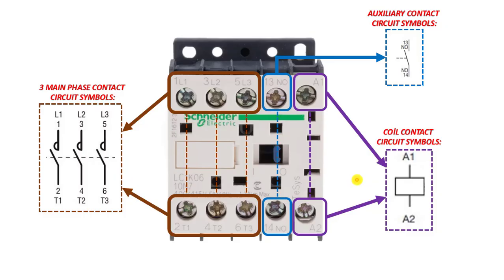The circuit symbol for the coil is shown on the right. The basic working principle of the contactor is: when we give the necessary voltage to the coil, the three main contacts and one auxiliary contact — which are normally open — become closed. When the required voltage is applied to A1 and A2, all contacts close and the connected loads start working.